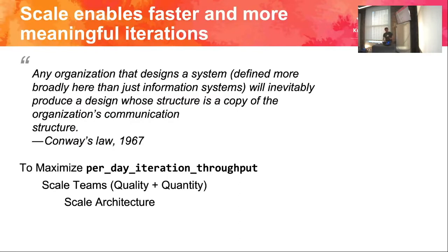Let's get back to the iteration speed slide. We need to focus on per-day iteration throughput. In order to survive longer and make the best outcome, we need to improve that. You need more people to scale the team — scale is not just hiring more, but better productivity, quantity, and quality. You also scale the architecture, because you need a good architecture so that you can scale the team. If you keep throwing people in without thinking about architecture, you get really diminishing returns.